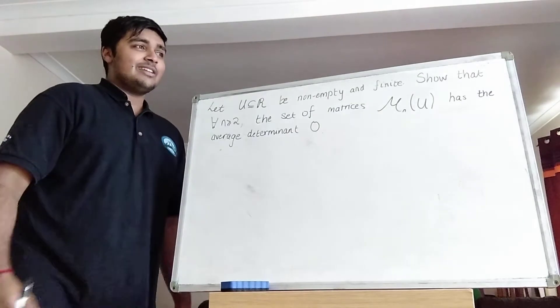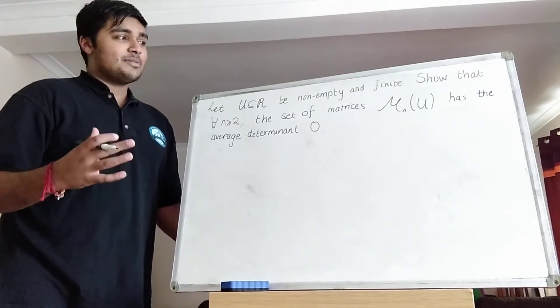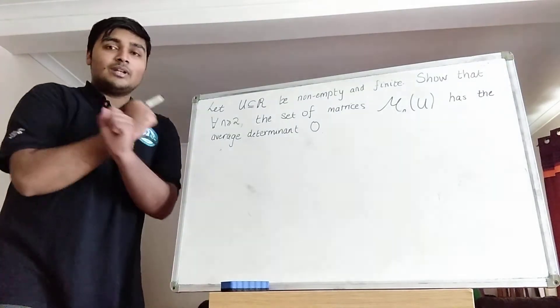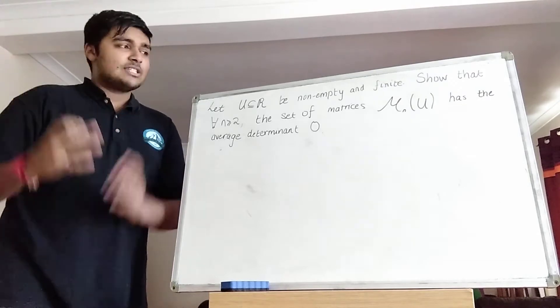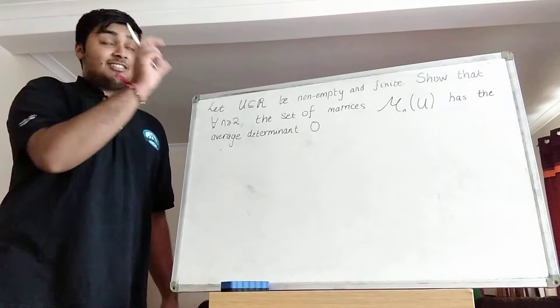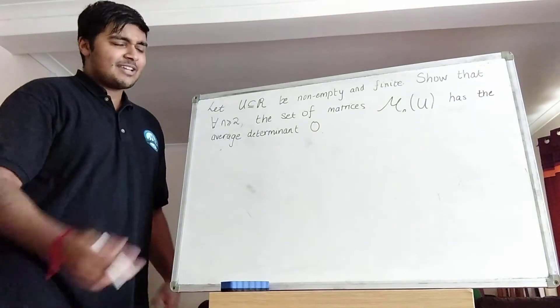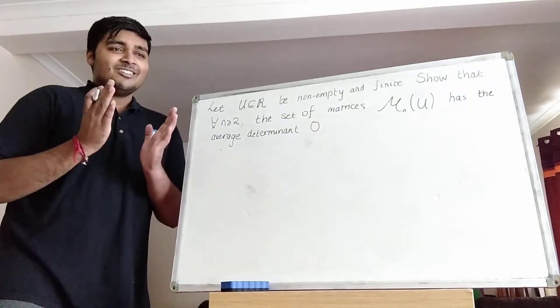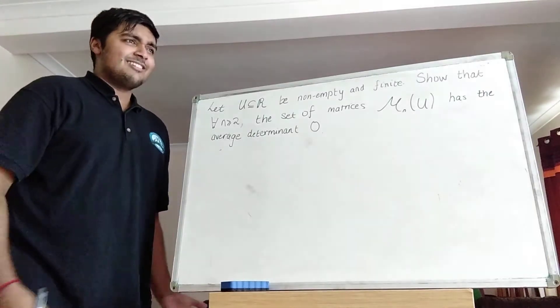Okay, the solution to this is quite neat. It uses a property of the determinants that whenever you interchange two rows or interchange two columns, you're going to change the sign of the determinant of the matrix. Okay, so if you swap two rows of a matrix, you're going to put a minus sign in front of the determinant.